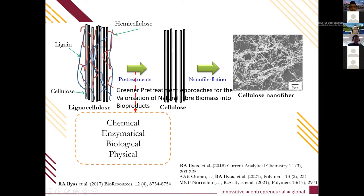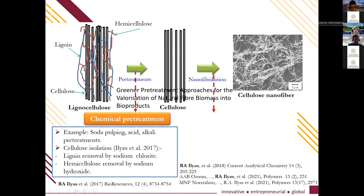Natural fiber from plants consists of three main components: lignin, cellulose, and hemicellulose. After treatment by chemical, enzymatic, biological, and physical methods, we obtain cellulose. Chemical treatments include soda pulping, acid, and alkali treatment.